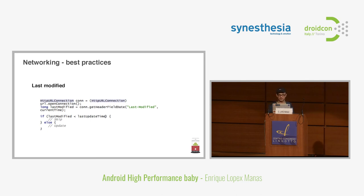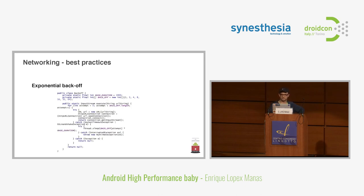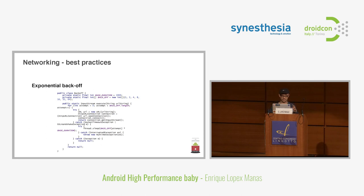Last but not least: exponential backoff. Sometimes we get a 500 or 404 from a web service, and it's very likely the next second will produce the same error, so there's no reason to keep retrying constantly. If a connection didn't work out, instead of keep fetching, wait two units of time; if it keeps failing, wait four, then eight — growing exponentially up to say 16 or 32 units. This avoids frustrating the user. Some apps keep retrying all the time even when there's no connection, which is very annoying — smart apps should realize there's no point in keep trying.